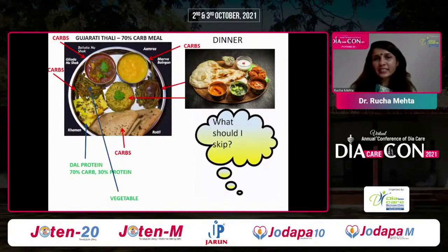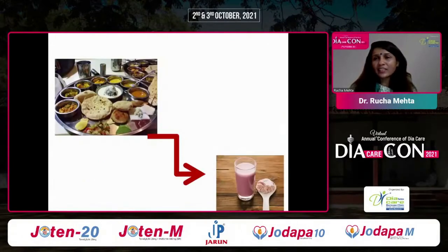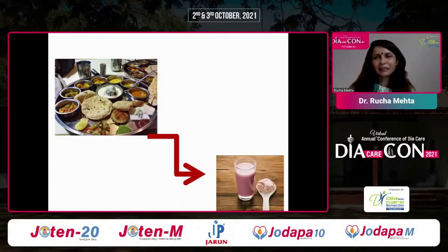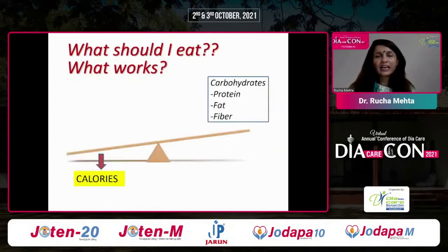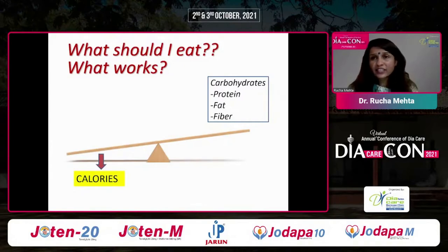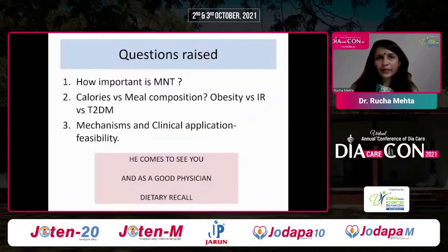Portion control is not working and is not sustainable. The DIRECT trial recommends replacing one meal with a shake, but how many patients are ready to do that for the rest of their life? It's not a diet — it's a mindset. The key question is: does weight loss come from simply reducing calories, changing macronutrients, or both?